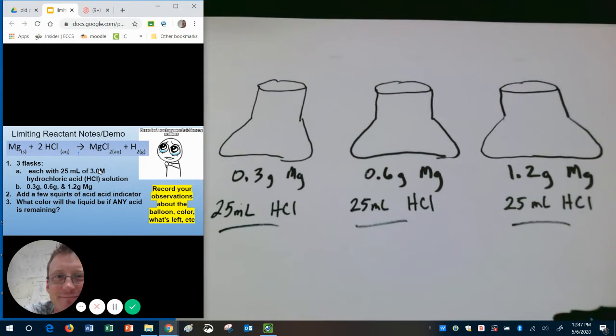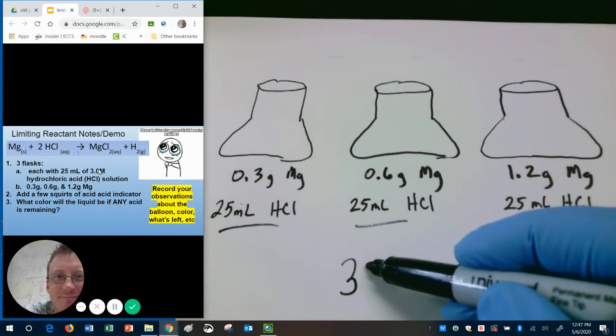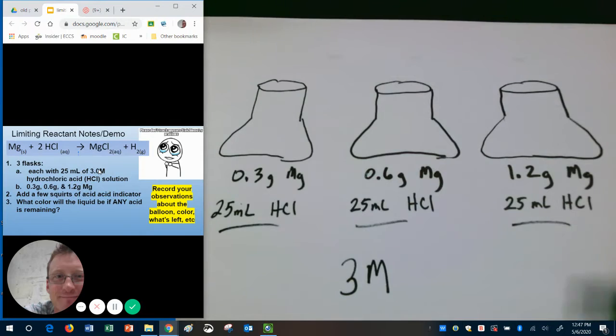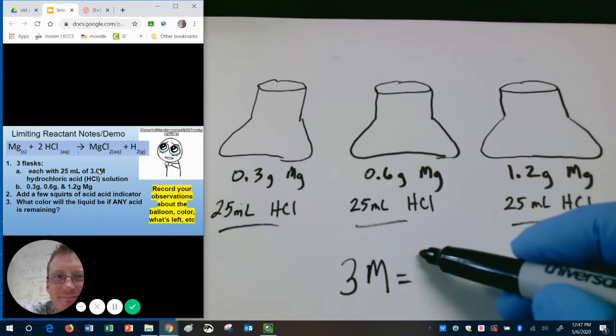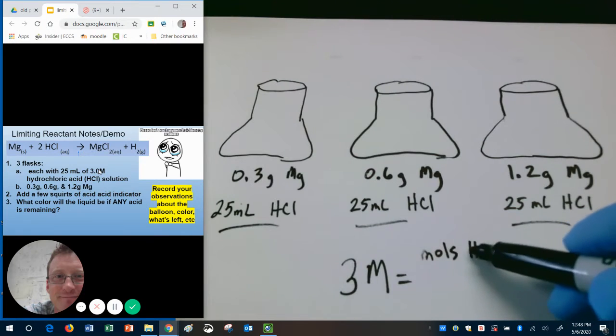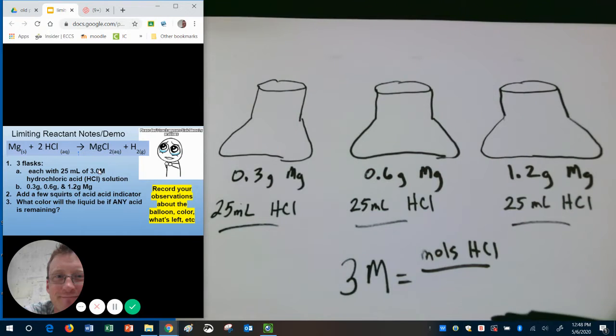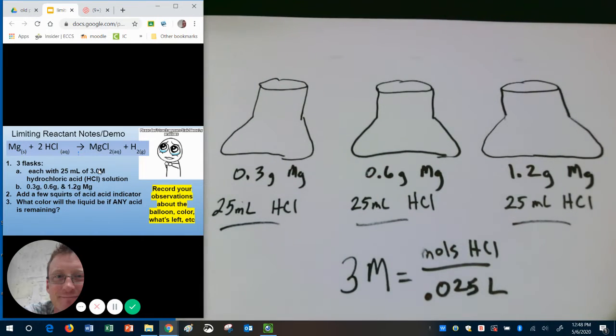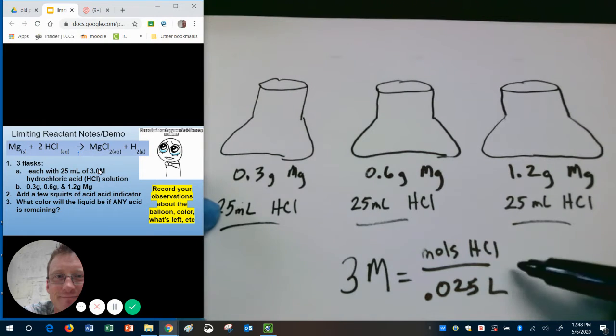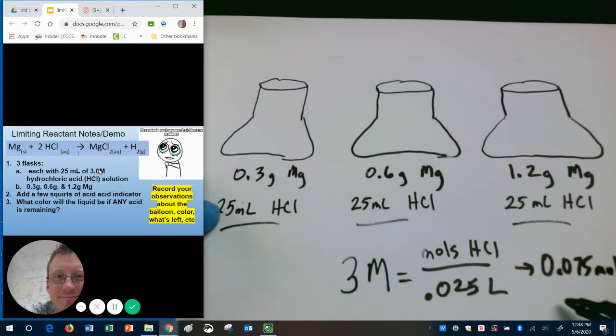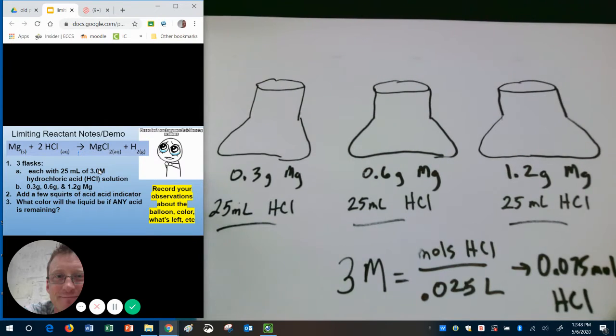Well that's a molarity calculation. We know that the concentration is 3 molar. The equation for molarity is moles over liters. So we're going to say moles of HCl over, notice I said liters not milliliters, so I have to remember to convert 25 milliliters into liters and that'll give me 0.025. I'm going to multiply both sides by 0.025 to get my answer. We have 0.075 moles of HCl.